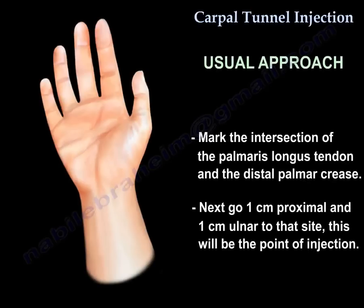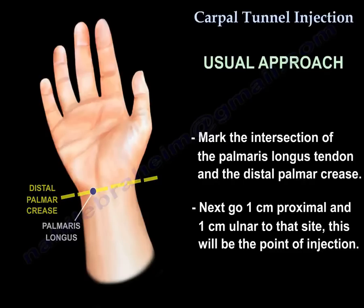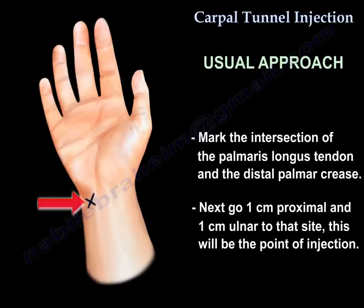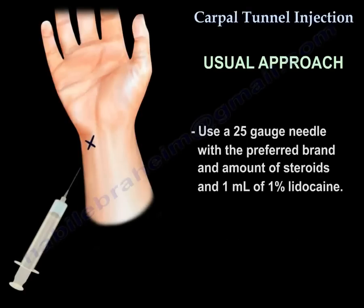When you do the usual approach, you mark the intersection of the palmaris longus tendon and the distal palmar crease. Next, you go one centimeter proximal and one centimeter ulnar to that site — this will be the point of injection. You're going to use a 25-gauge needle with your preferred brand and amount of steroids, and one milliliter of 1% lidocaine.